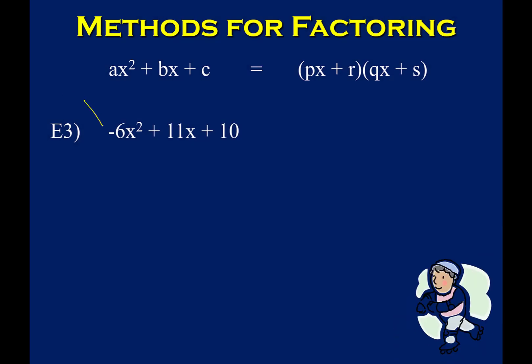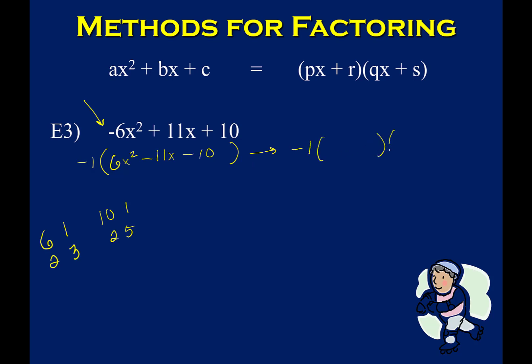I strongly encourage you that when you see a negative lead coefficient, you remove a GCF of negative 1 from those three terms. While this is factorable with the negative there, it is more complicated and much quicker if we remove that GCF. So I'm going to remove a GCF of negative 1, which means dividing each term by negative 1 — basically all the signs are going to change. We get 6x squared minus 11x minus 10.